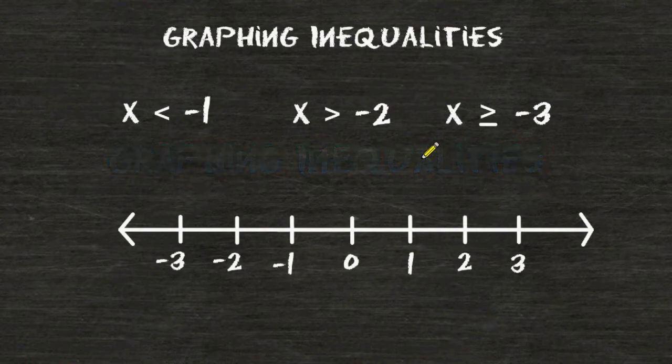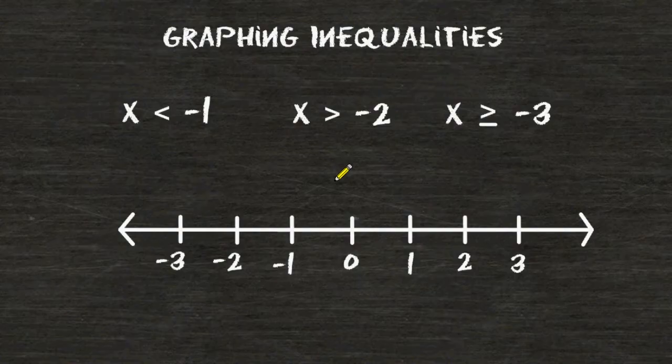We have three inequalities that we have to graph using the number line shown below. The first inequality that we are going to graph is x is less than negative 1.